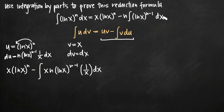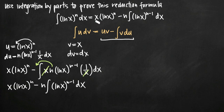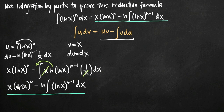We need to simplify this so it matches the right-hand side of our reduction formula. First, we can cancel an x from the numerator and denominator inside our integral. We also recognize that n is a constant, not a variable, so as a constant coefficient it can be moved out in front of the integral. What we're left with is x times ln of x to the n, minus n times the integral of ln of x to the n minus 1 dx — which is exactly the reduction formula we have up here.